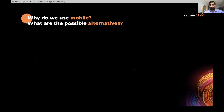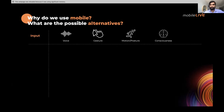Why am I confident saying that mobile is dying and the future is immersive? Let's look at why we use mobile phones. We use them to give input to machines — we talk, type, touch the screen, provide input with clicks and gestures. Voice technologies are shaping up very, very fast — voice is becoming a very viable alternative for providing input to machines. Gestures are also maturing up.